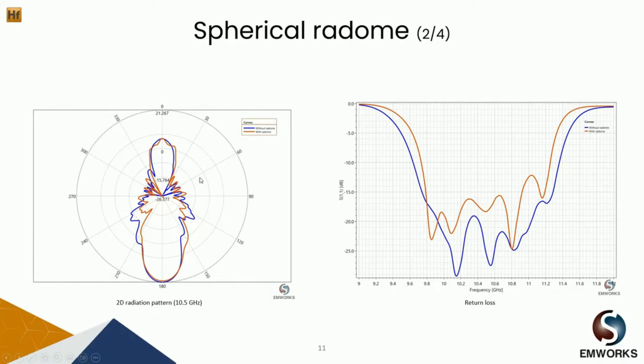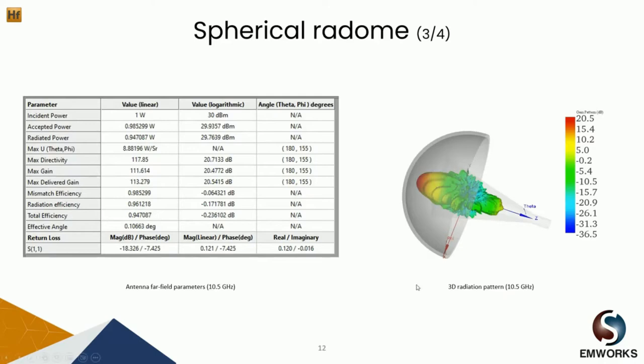When designing a radome, one of the parameters the antenna engineer looks at is the radiation pattern. We'll be focusing on the antenna beam width, the antenna boresight, as well as the side lobes. Looking at the 2D radiation pattern on the right, we can see that there is a slight change in terms of antenna gain, but the more noticeable change is in the side lobes. We can see there is no boresight error, but the only change is in terms of the side lobes. On the right we can also see the 3D radiation pattern of the antenna.